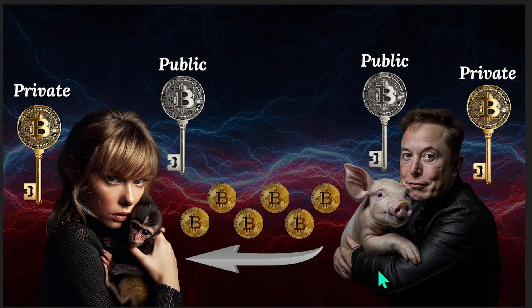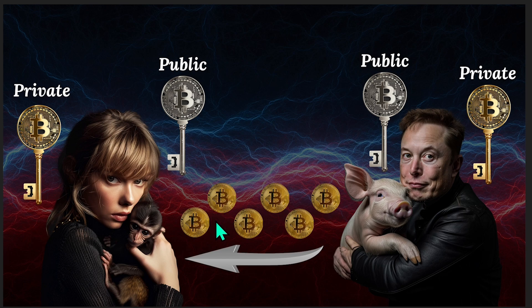The total transaction, including Taylor's public key as the recipient and Elon's cryptographic signature, is broadcast to the Bitcoin network. Even though it's broadcast to the Bitcoin network and the transaction is visible to the network, Elon's private key always remains a secret.